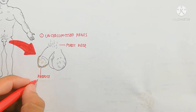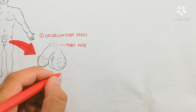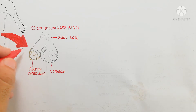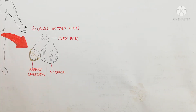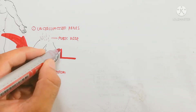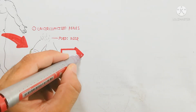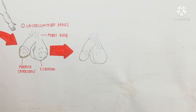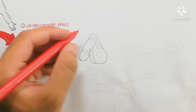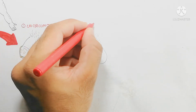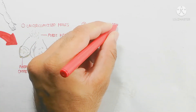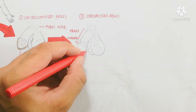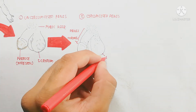Here is the male reproductive system with an uncircumcised penis. This is the pubic hair, and here is the prepuce or foreskin, and here is the scrotum. After birth, the prepuce will be removed in some religious cases, and that means the glans will appear. This removing of the foreskin is considered very important and beneficial. Here is the penis and here is the corona, and at the front is the glans.